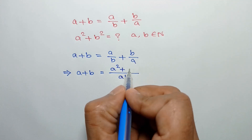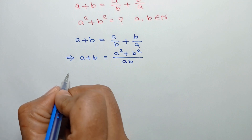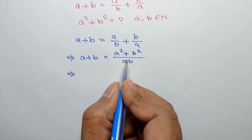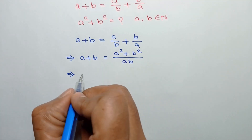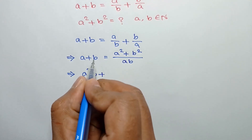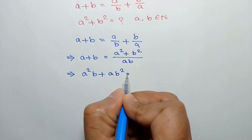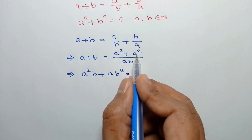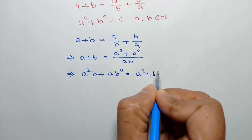Multiplying both sides by ab, we can write a times ab is a squared b, plus b times ab is ab squared, equal to multiplying the right side by ab. The ab cancels out, so it remains a squared plus b squared.